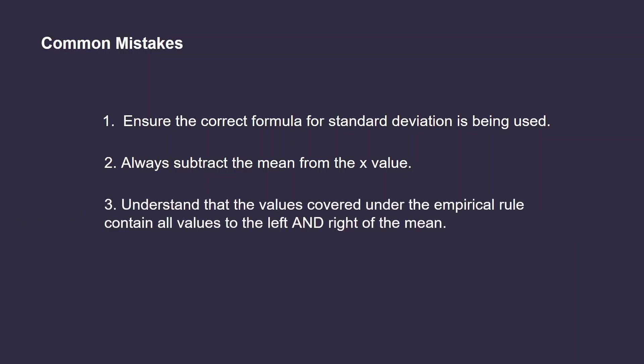Lastly, one must understand that the 68, 95, and 99.7 values of the empirical rule cover values both to the left and to the right of the mean. A good way to avoid this mistake is to also think of the empirical rule as having 34% of values being one standard deviation to the left of the mean.